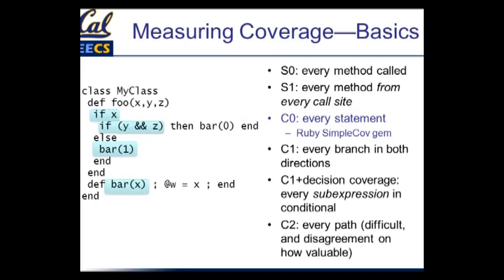Here's a really simple class we can use to talk about different ways to measure how our tests cover code. There are a few different levels and different terminology — it's not really universal across all software houses. One common set of terminology is S0, which just means you've called every method once. If you call foo and you call bar, you're done — that's S0 coverage, not terribly thorough. A little more stringent, S1, means you're calling every method from every place that it could be called. C0, which is what SimpleCov measures, basically says you've executed every statement — you've touched every statement in your code once. But the caveat is that conditionals really just count as a single statement.